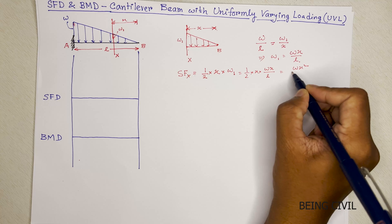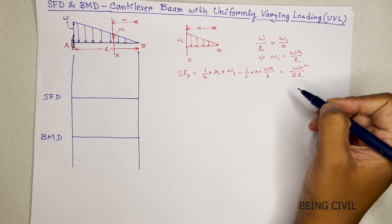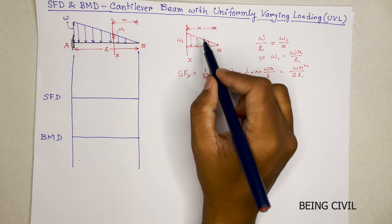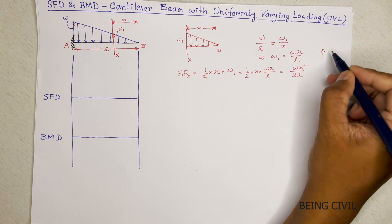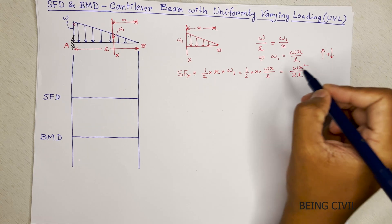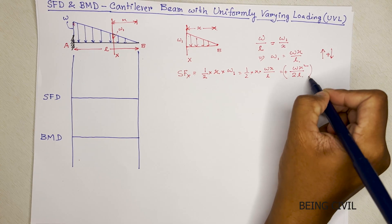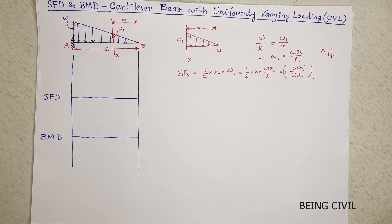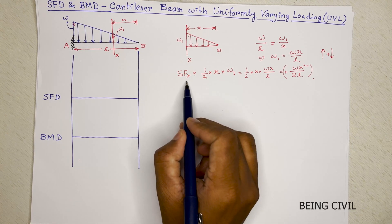So Wx square by 2L. And the nature of the force is left up right down, so it's positive. So we got the shear force equation.